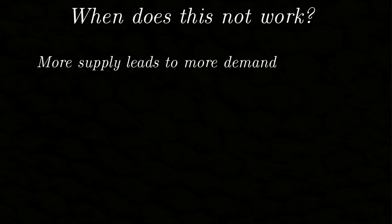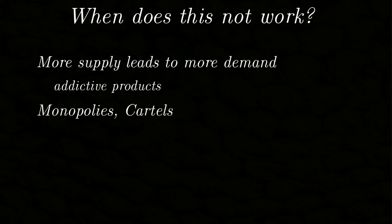Let us analyze some cases in which this does not hold. One example is when more supply leads to more demand — addictive products come to mind. Another situation in which the invisible hand fails is in the presence of monopolies or cartels, which can arbitrarily restrict the supply. Smith was highly critical of cartels and monopolies for exactly this reason. Finally, we have art, because art functions as an investment. The main reason art is valuable is because people want it to be valuable.